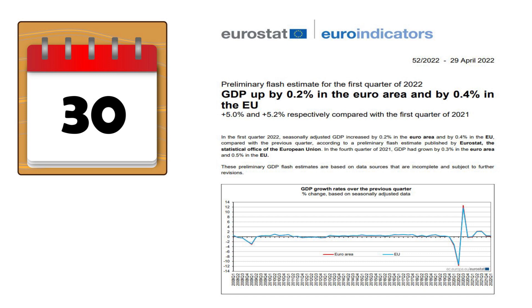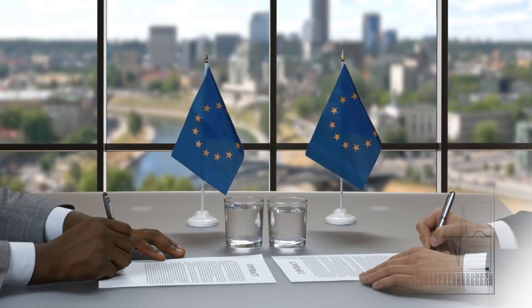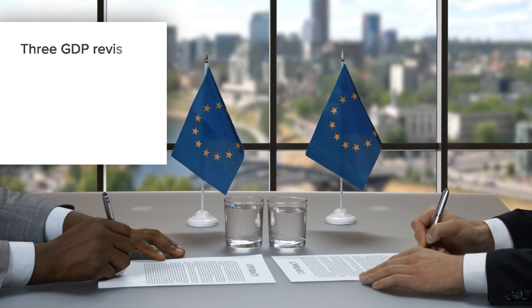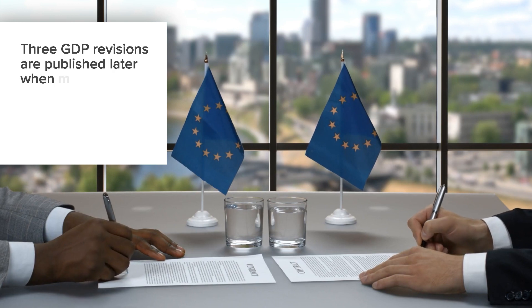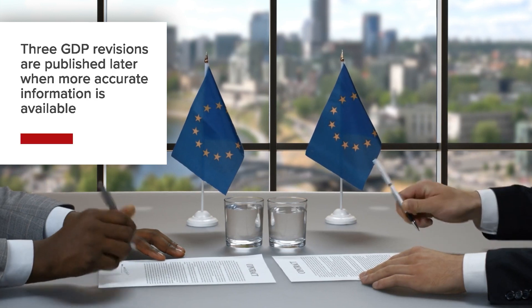The data release is published quarterly, generally near the 30th day of the month, one month after the reference quarter at 9am London time. Additionally, three GDP revisions are published later when more accurate information is available.